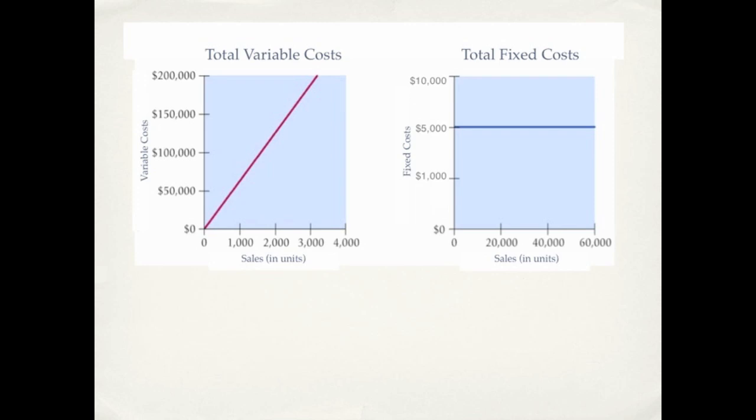So again this is just verifying the definitions before. Variable costs, as you can see, in total increase as the activity level increases. Total fixed costs remain unchanged as our sales volume changes.